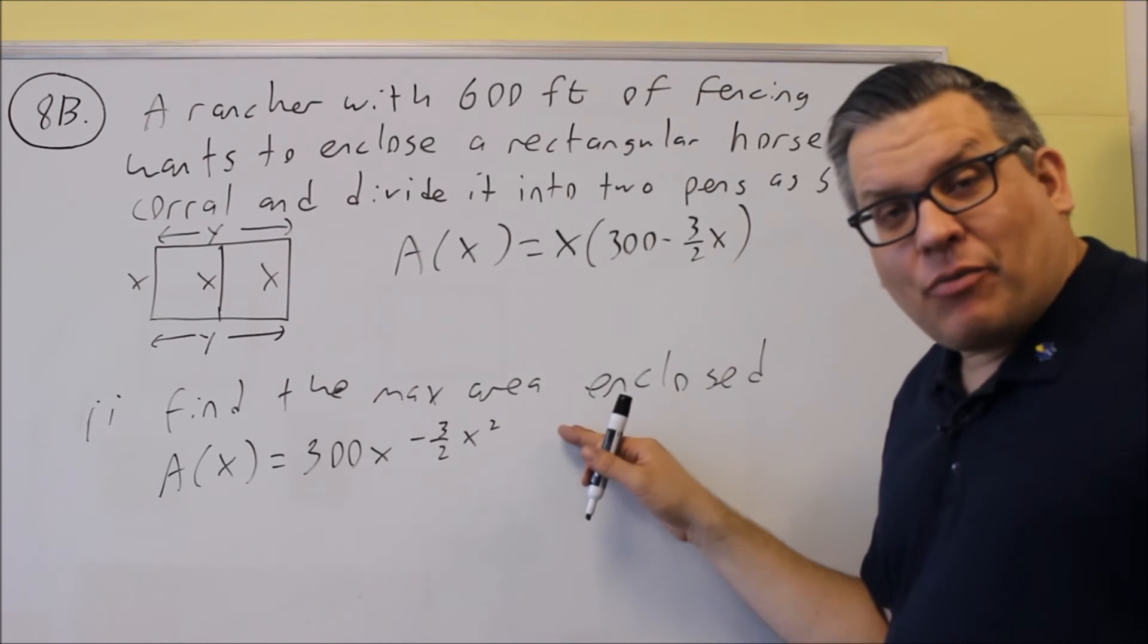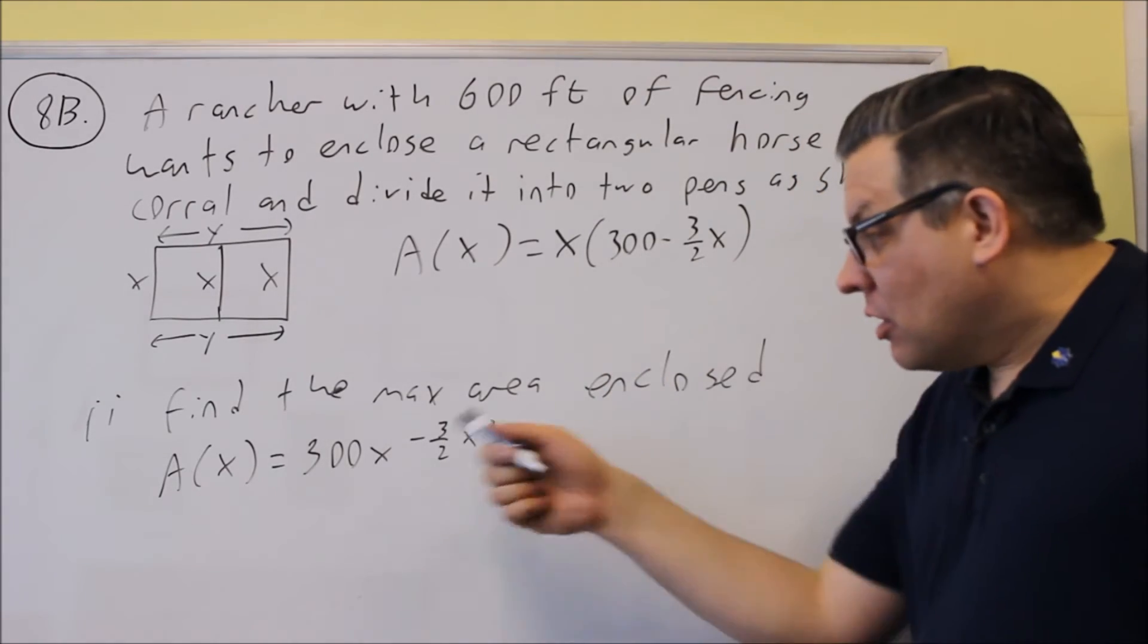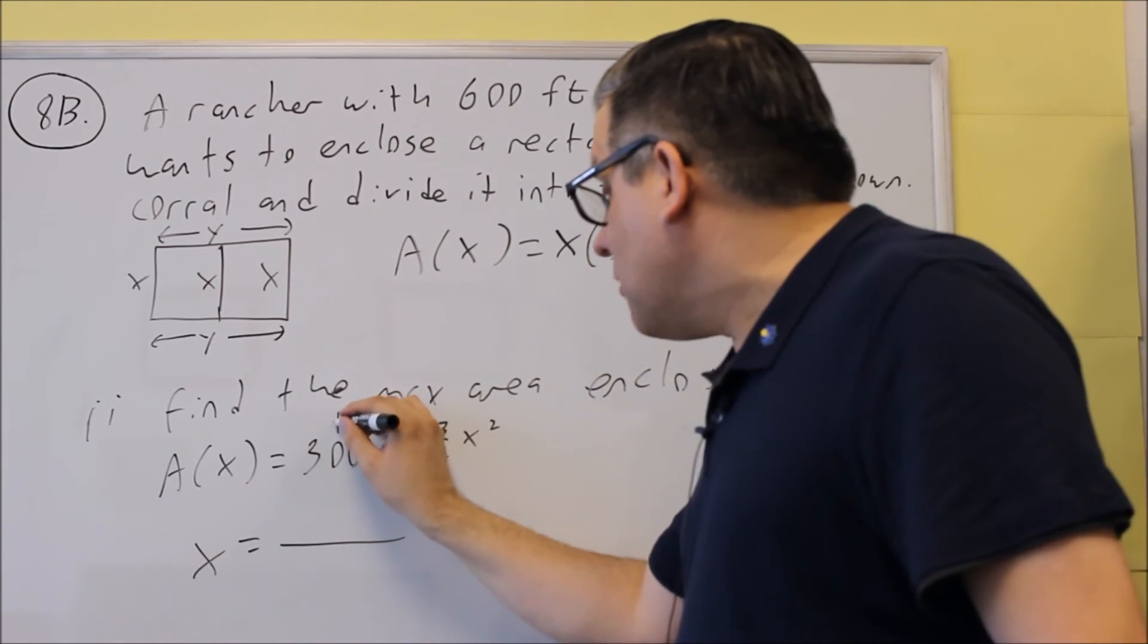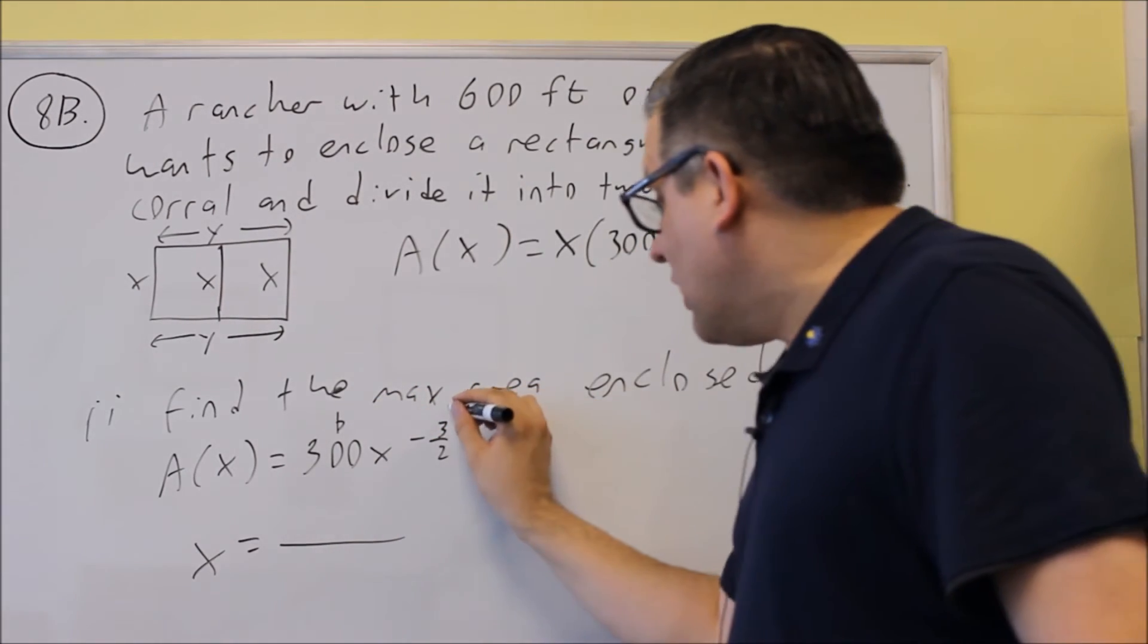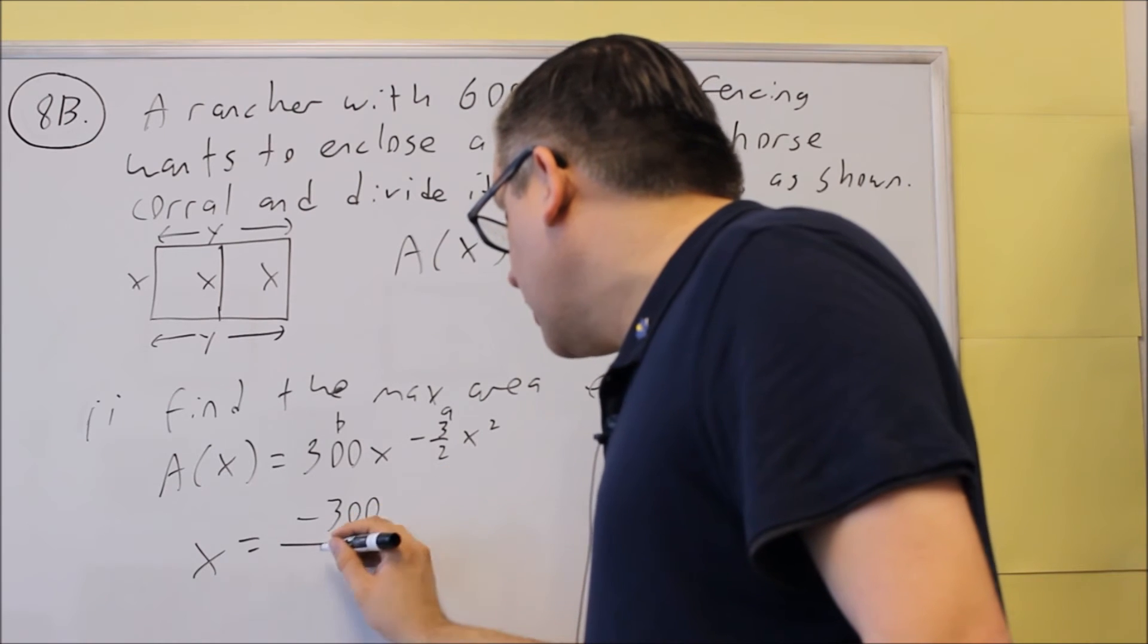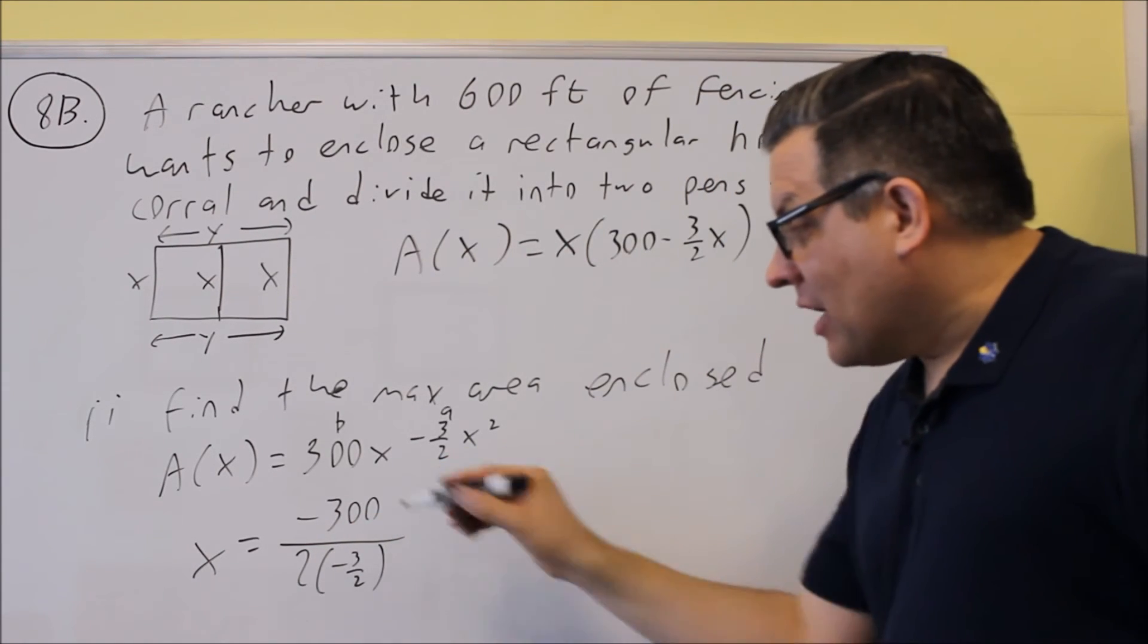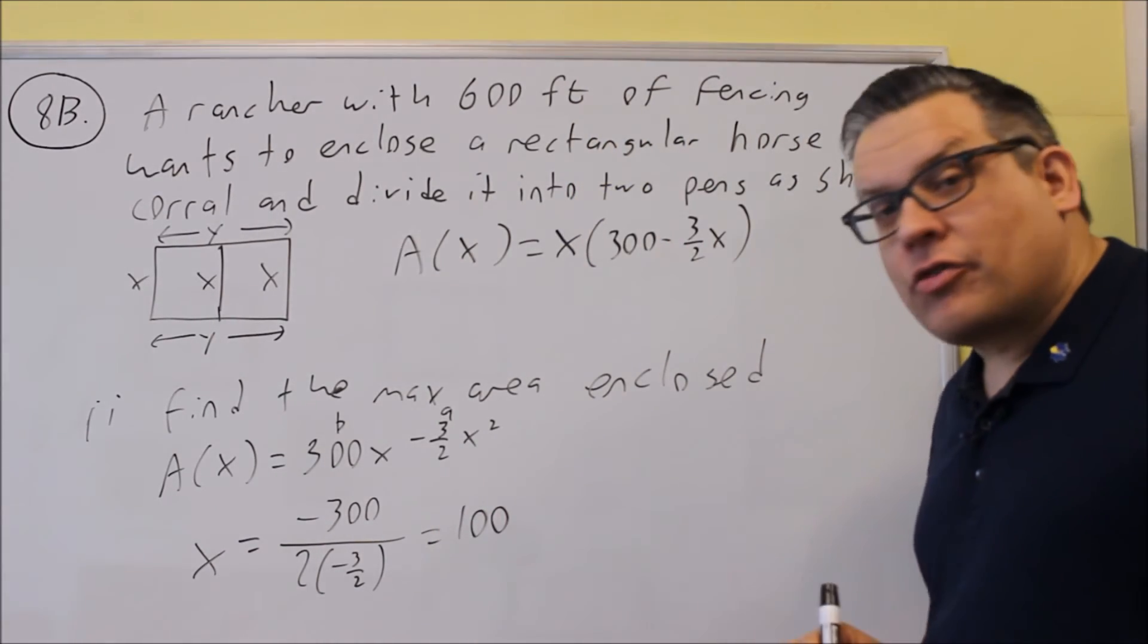And what I want to do now, since I have my quadratic formula, is I now want to do the vertex formula. So again, any time you want to find a max or min, we have to use the negative b over 2a formula. The b value is always in front of the non-squared variable. So b is in front of the x. The a here would be the negative 3 halves. So I'm going to do negative 300 divided by 2 times negative 3 halves. The 2's are going to cancel out. I get negative 300 over negative 3, which is going to be positive 100.